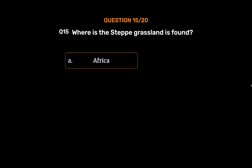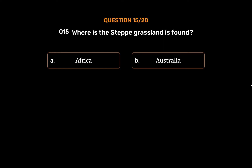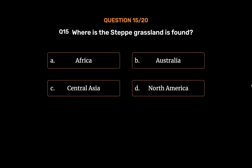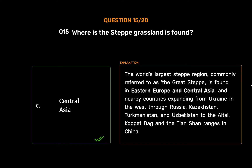Question number 15: Where is the steppe grassland found? Option A: Africa. Option B: Australia. Option C: Central Asia. Option D: North America. The correct answer is Option C: Central Asia. The world's largest steppe region, commonly referred to as the Great Steppe, is found in Eastern Europe and Central Asia, expanding from Ukraine in the west through Russia, Kazakhstan, Turkmenistan, and Uzbekistan to the Altai, Copetdag, and Tian Shan ranges in China.